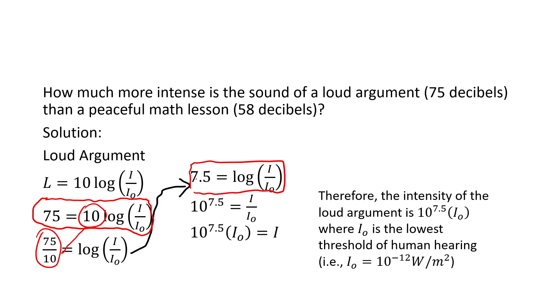Now, when we have 7.5 equals log of a quantity, we know that the log in question is 10. So, that means 10 to the exponent 7.5 is equal to the argument of the log in the previous step, which is I over I naught. So, 10 to the exponent 7.5 times I naught is the intensity of the loud argument. It's 10 to the 7.5 times louder than the lowest threshold of human hearing.